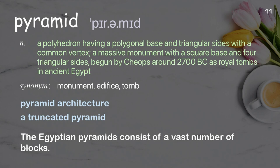Pyramid: an ancient structure begun by Khufu around 2700 B.C. as royal tombs in ancient Egypt. Examples: pyramid architecture, a truncated pyramid. The Egyptian pyramids consist of a vast number of blocks.